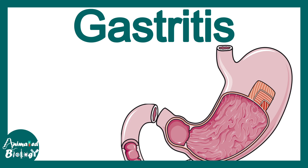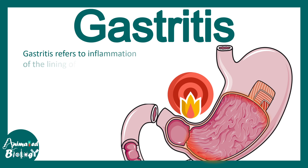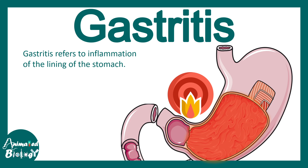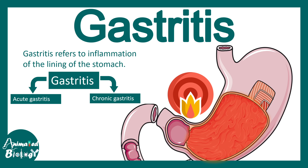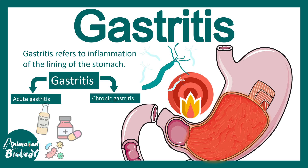In this video we'll be talking about gastritis. Gastritis refers to the inflammation of the lining of the stomach. There could be two types of gastritis: chronic and acute. Chronic gastritis is often associated with H. pylori infection, and acute gastritis has many reasons — let us review that aspect.